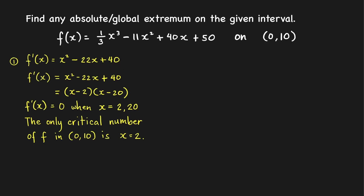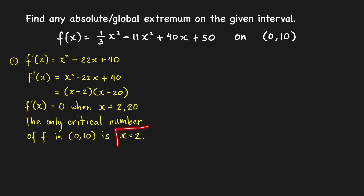Factoring the trinomial, we get (x − 2)(x − 20). Therefore, the derivative equals 0 when x = 2 or x = 20. Since we're looking for critical numbers in the interval (0, 10), the only critical number of the function is x = 2. We found exactly one critical number in the open interval (0, 10). So if this critical number gives a minimum or maximum, we are sure it is an absolute maximum or absolute minimum.